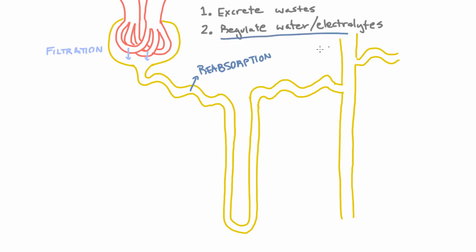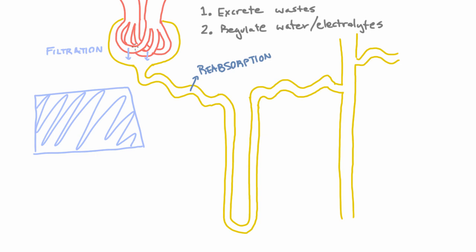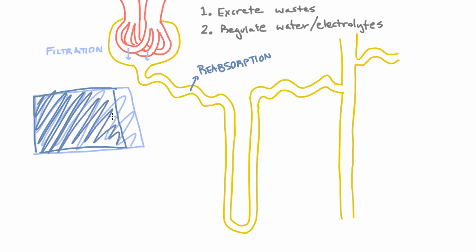Whereas regulating water and electrolytes is all about reabsorption, because the amount that you filter is far too much. You don't want to excrete the whole quantity that you're filtering here, and so you end up wanting to reabsorb most of it. And if you want to excrete more water or more electrolytes, then you're going to reabsorb a little less. If you want to excrete less water and less electrolytes, you'll reabsorb a little more.